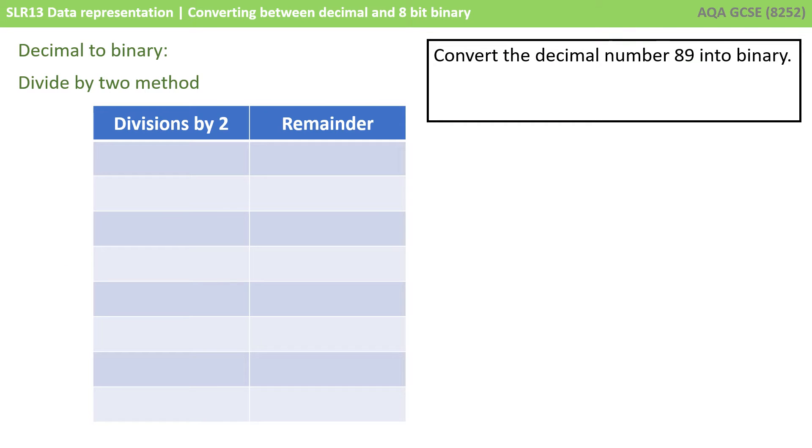With the divide by 2 method we're going to use a table to illustrate what happens. We're going to convert the decimal number 89 into binary. The first thing we do is take the number 89 and divide it by 2. What we end up with is 44 and we have 1 left over. So we write that in the remainder column.